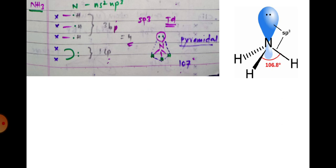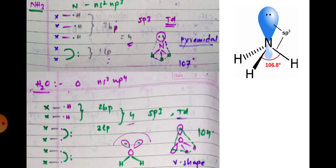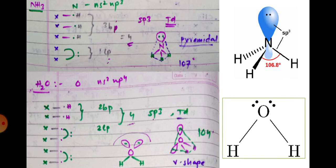For water (H2O), oxygen is the central atom with ns2np4 — six valence electrons, making six crosses. Two hydrogens share two electrons with oxygen; the remaining four electrons are unshared — two lone pairs. Total = 2 bond pairs + 2 lone pairs = 4, so sp3 hybridization. Geometry is tetrahedral, but with two lone pairs, the bond angle reduces from 109° to 104°, giving a V-shape or angular structure. Methane is tetrahedral, ammonia is pyramidal, and water is V-shaped — all sp3 but different shapes.